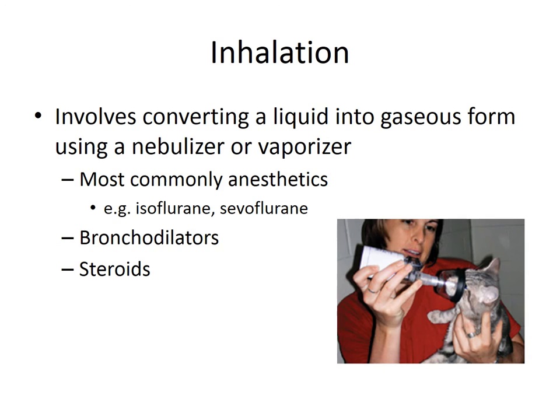Inhalation involves converting a liquid into gaseous form using a nebulizer or vaporizer. Most of the time it's anesthetics, but also sometimes bronchodilators and steroids. For an asthmatic cat, inhalation treatments help open up their bronchi and keep them breathing nicely — and cats actually get used to this fairly quickly.